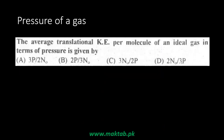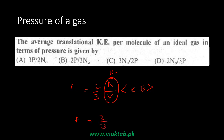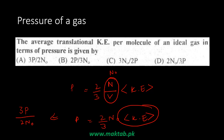For average translational kinetic energy per molecule: we know P = (2/3)(N₀) × KE, where N₀ is the number of molecules per unit volume. Rearranging to solve for KE: kinetic energy = 3P / (2N₀). This is option A. The other options are incorrect. Note that 2/3 × N₀ moves to the right-hand side as 3/(2N₀).